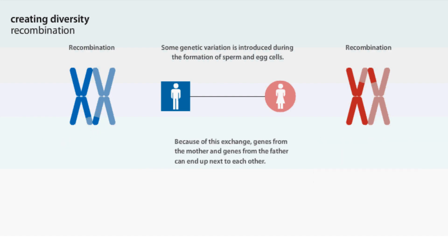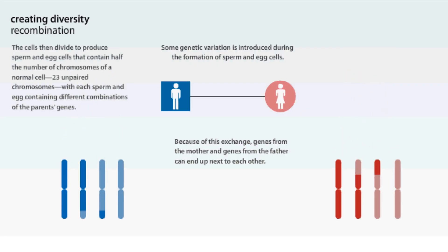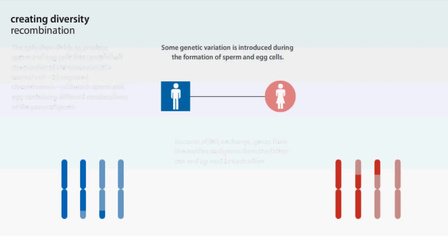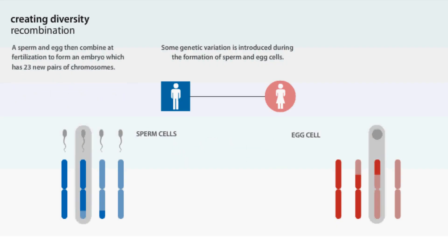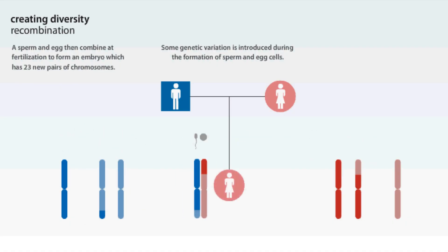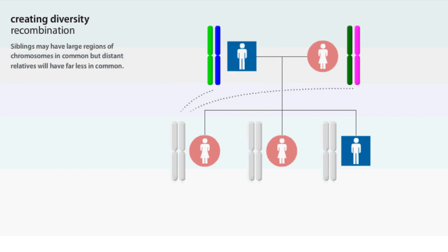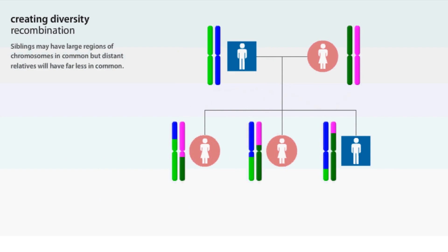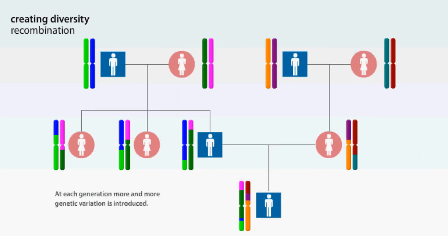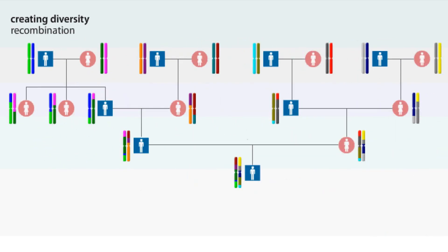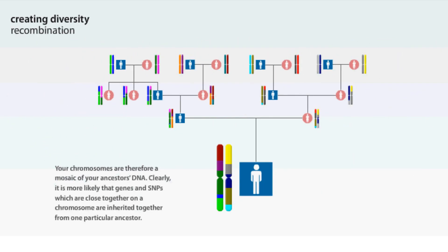Because of this exchange, genes from the mother and genes from the father can end up next to each other. The cells then divide to produce sperm and egg cells that contain half the number of chromosomes of a normal cell — 23 unpaired chromosomes — with each sperm and egg containing different combinations of the parent's genes. A sperm and egg then combine at fertilization to form an embryo which has 23 new pairs of chromosomes. Siblings may have large regions of chromosomes in common, but distant relatives will have far less in common. At each generation, more and more genetic variation is introduced. Your chromosomes are therefore a mosaic of your ancestors' DNA.